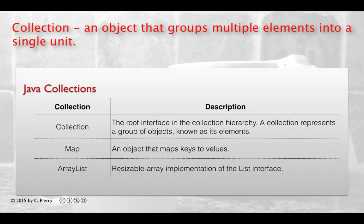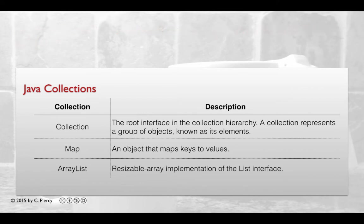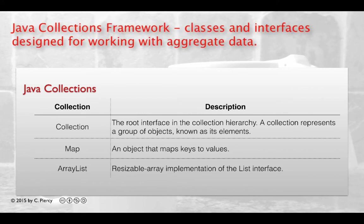Think of things that naturally form a group, such as a deck of cards, a music playlist, or the classic example of a telephone directory, which you can think of as a map mapping the names to telephone numbers. The Java Collections framework includes interfaces and classes that can make it easier to work with various types of collections.